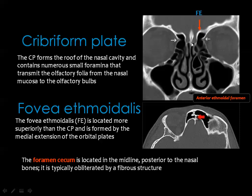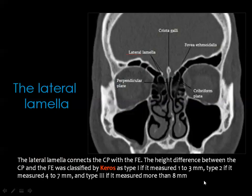One of the important structures is the cribriform plate of the ethmoid — this very fine horizontal blade — and this is the crista galli, and this is the depression for the olfactory bulb, or the olfactory groove. In this axial image you can see part of the frontal sinuses, and this arrow points to the foramen cecum, which contains nothing and is usually obliterated by fibrous tissue. This is what we call the lateral lamella, which is part of the anterior skull base — the junction between the cribriform plate and the fovea ethmoidalis.